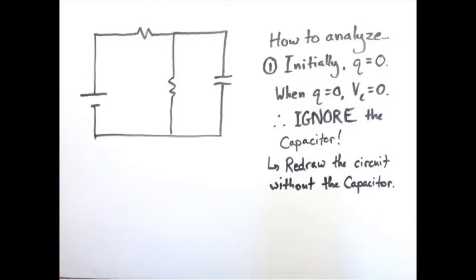So, the easiest way to analyze this moment, meaning the initial moment that the switch is first closed and charge begins to flow and the capacitor is not yet charged at all, is to redraw the circuit without the capacitor in it, which would look like that. A little tiny drawing down there.